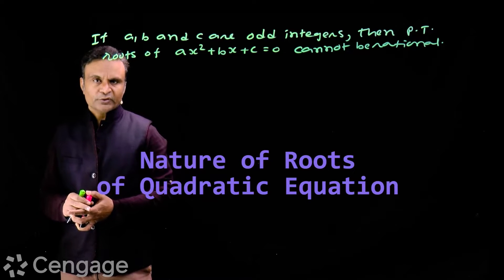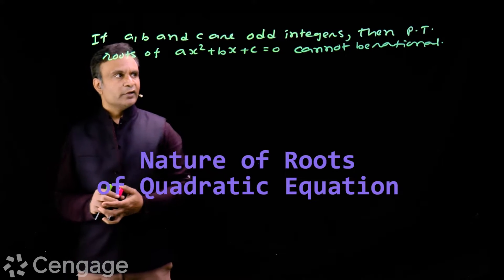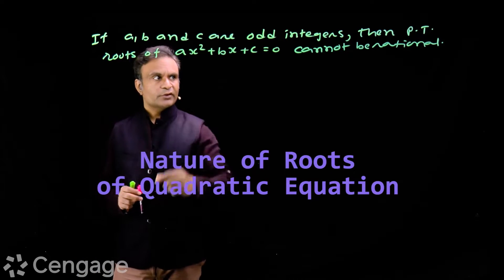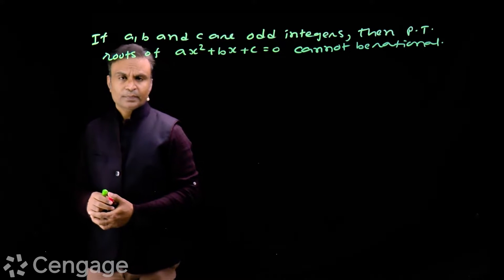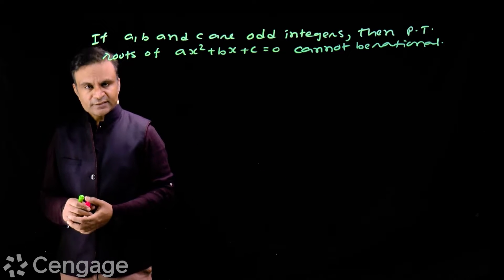Now we have one more question from number theory. The question is: if a, b, and c are odd integers, then prove that roots of this equation cannot be rational.